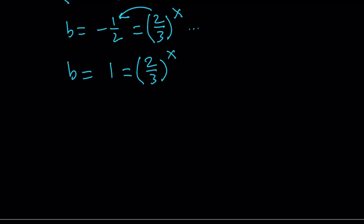So if you set 2 thirds to the power x equal to 1, come on, you know this, right? This means x is equal to 0. And guess what? This turns out to be the only solution.